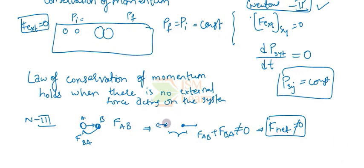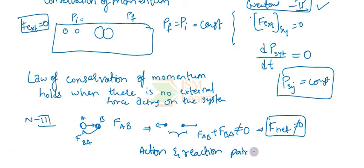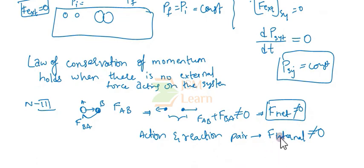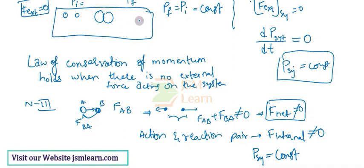You may doubt that if the net force is not zero, then momentum should not be conserved. But these forces — FAB and FBA — are an action-reaction pair, and action-reaction pairs are considered internal forces. Internal forces don't affect the momentum of the system. So though the internal forces between the particles are not zero, the momentum of the system is still conserved throughout the whole process.